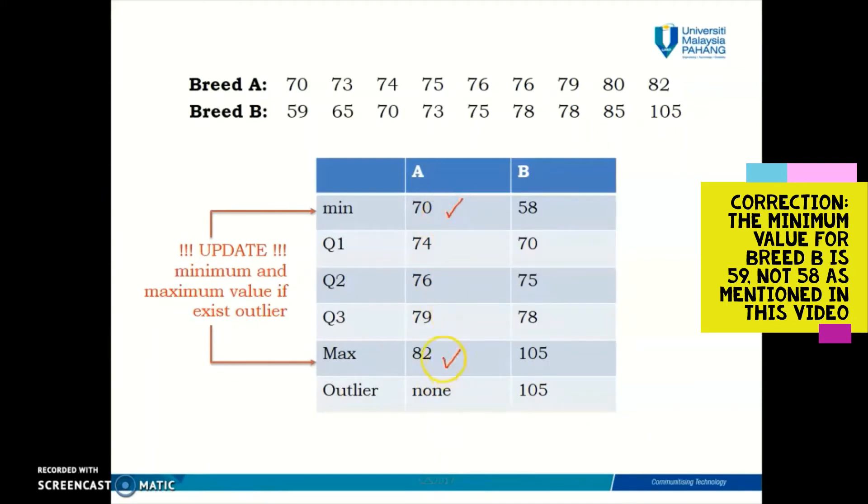But for breed B, since 105 is the outlier, your maximum value needs to be updated. The minimum and maximum values in box plots are the minimum and maximum values when you exclude all outlier values. Since 105 is considered an outlier, your maximum has to be updated. The maximum value is now the largest number in your data set which is not an outlier.